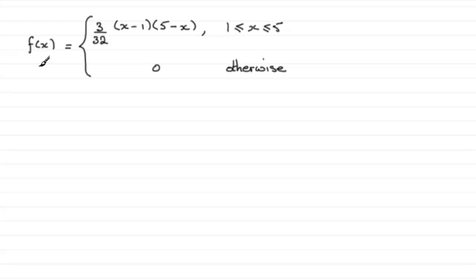Now we're given the probability density function f of x, and we've got to sketch it. So to sketch something like this, just have our f of x and our x-axis here, let's just mark those on.